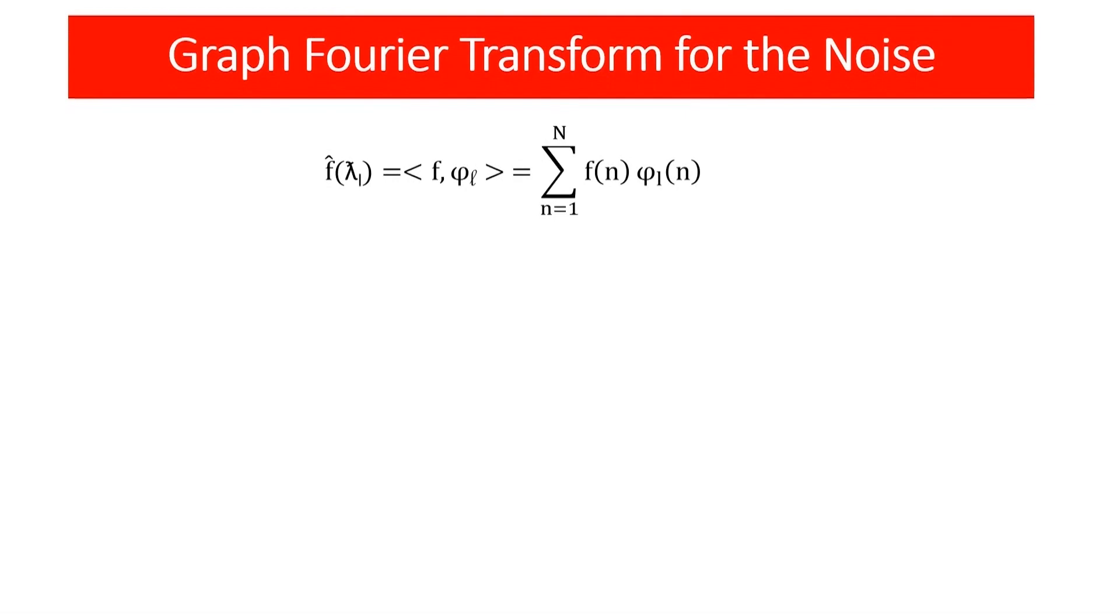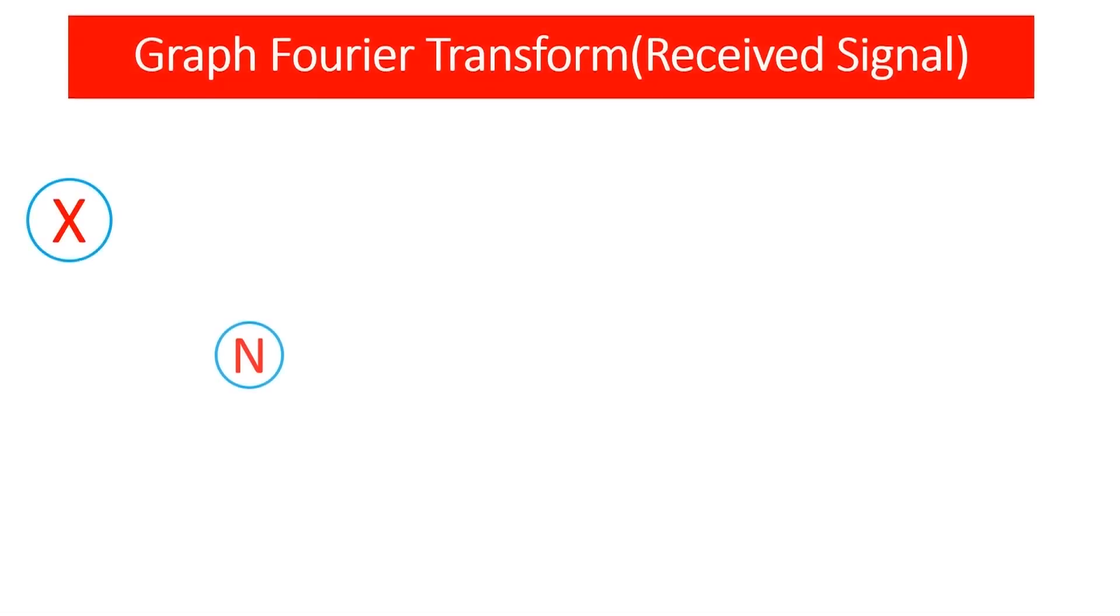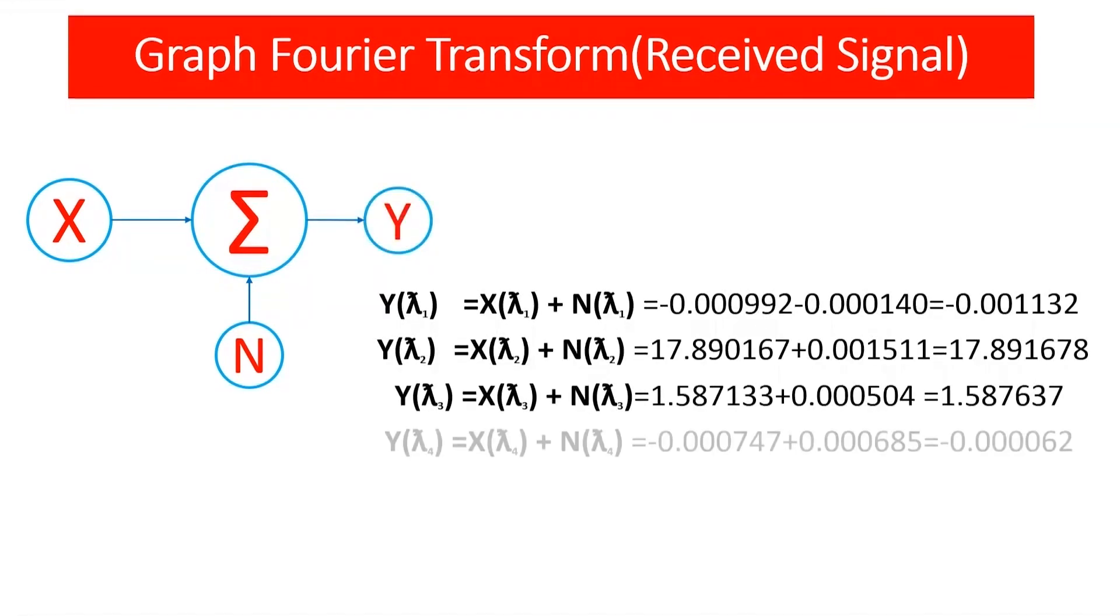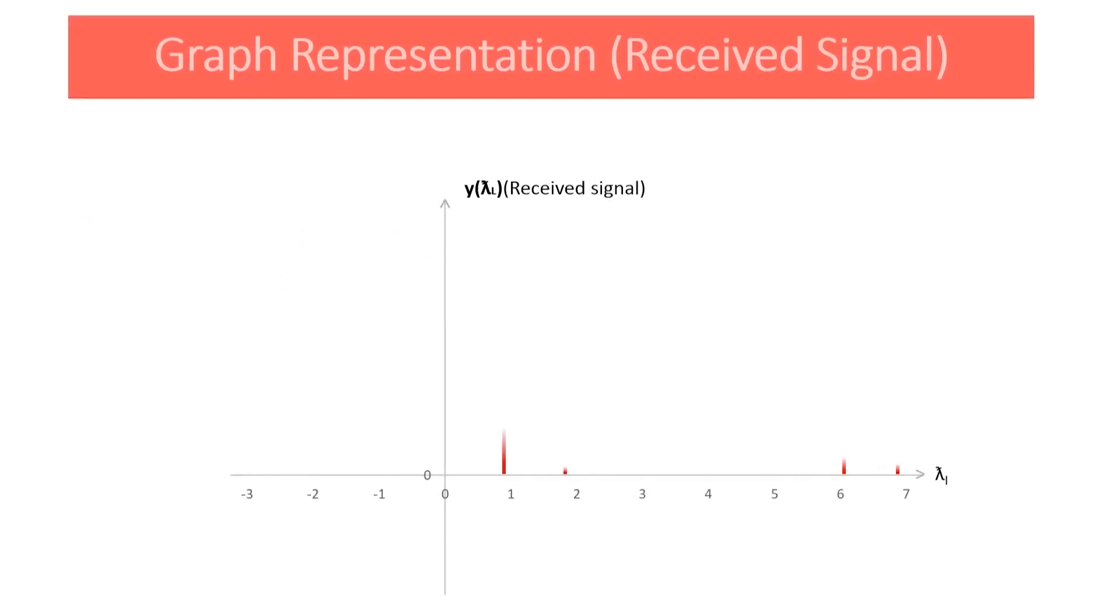Secondly we create a noise using higher frequency components. After that we should get graph Fourier transform then we denote the details from GFT in a graph for a clear view. When the above signal transfers from transmitter to receiver, earlier mentioned noise can be mixed with the signal. The receiver signal's Fourier values are shown on the screen. Let's represent the Fourier values in a graph.